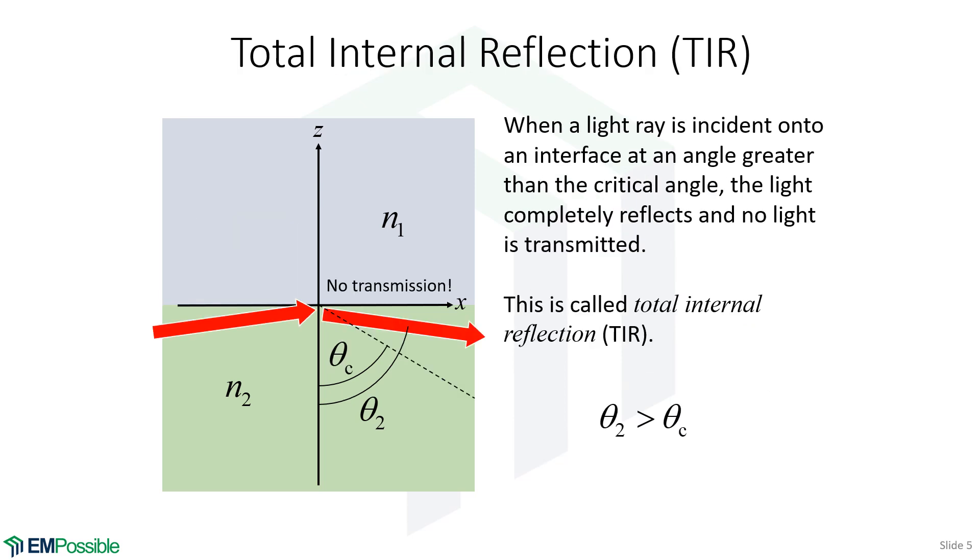Here is something very interesting and useful about the critical angle. If our wave is incident from below at an angle greater than the critical angle, there is no transmitted angle up here. In that case, the wave is completely reflected from the interface—we call that total internal reflection.